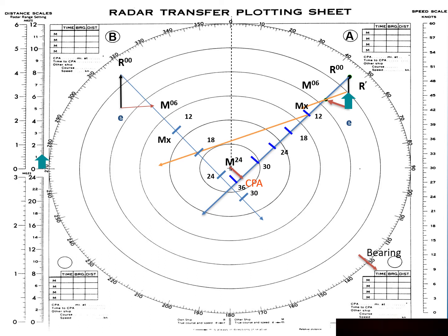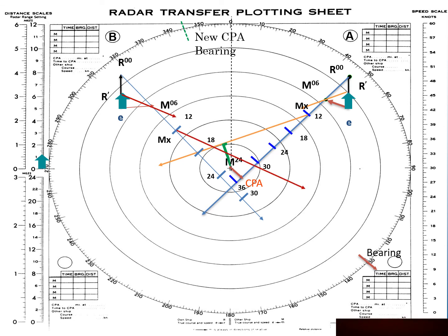If I do a speed change on one contact, I have to do it on all the contacts. So I'm going to apply the same 10-knot speed change to contact Bravo. I'm going to parallel that 10 knots, go E to E, and get an R prime. The old relative motion was R00 to M06; the new one is R prime to M06. Then I parallel that down to MX. This will not work for me at all, because now, instead of crossing my stern by one mile, he's going to be crossing my bow by one mile. I can only hope that he will follow the rules under Rule 16 and actually give way and take my stern, so I don't have to do further situational assessment.